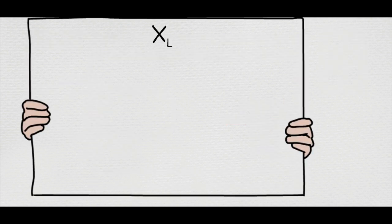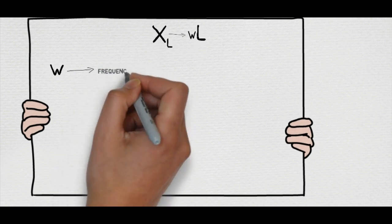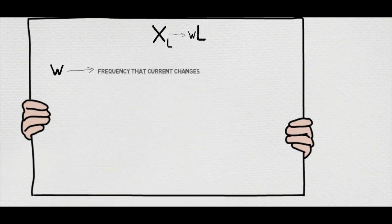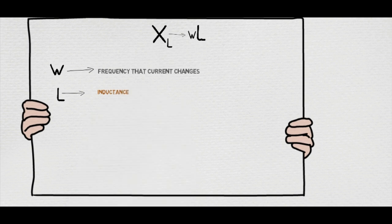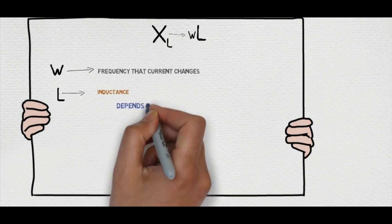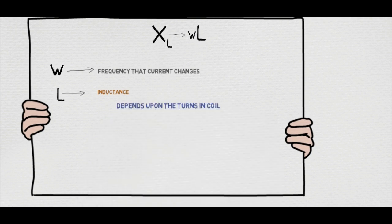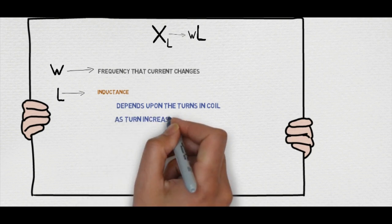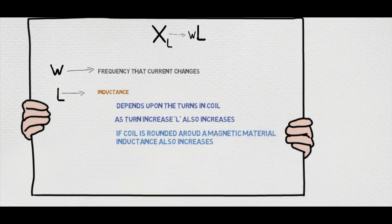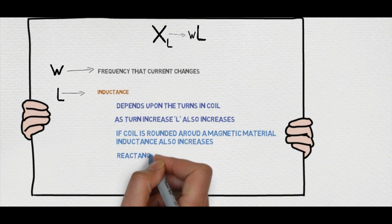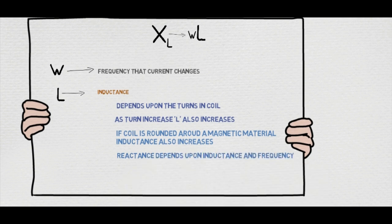It is denoted as XL, which is equal to omega L. Omega is the frequency at which current changes, and L is inductance, which is a constant. It depends upon the turns in the coil. More turns in the coil increase the inductance, and fewer turns decrease the inductance. If the coil is wound around magnetic material, then the value of L becomes more. So reactance depends upon the inductance and frequency.